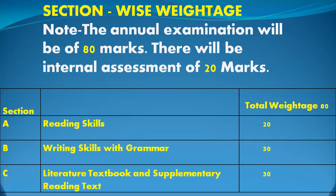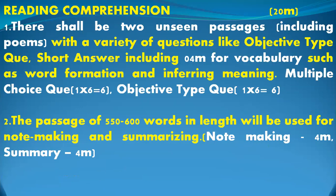Now let's look at the paper pattern — what will come in the first question, second question, and so on. As you know, the Reading section will be of 20 marks. In these 20 marks, your first question will have an unseen passage, which will include objective type questions, short type questions, and four vocabulary words that you have to find from the passage. It will be six marks plus six marks — so 12 marks total for your first question.